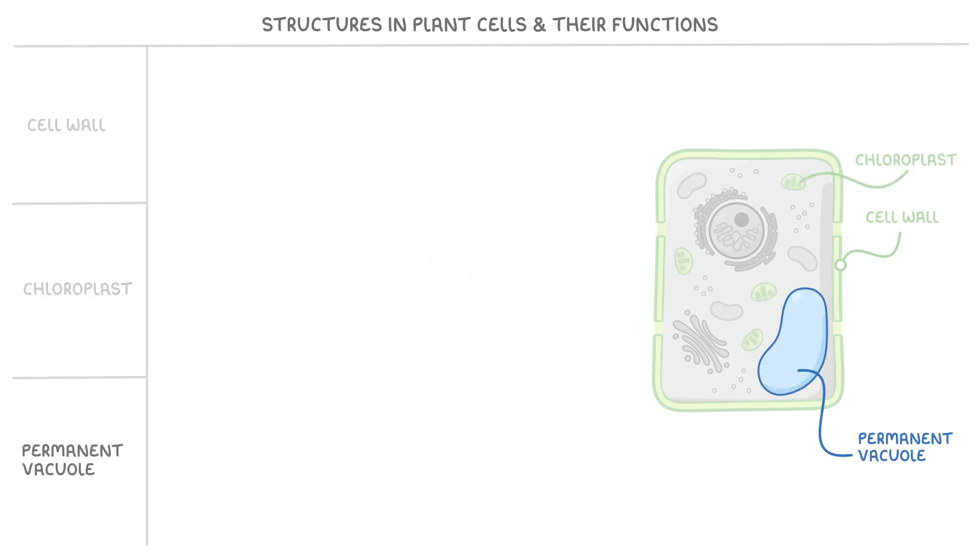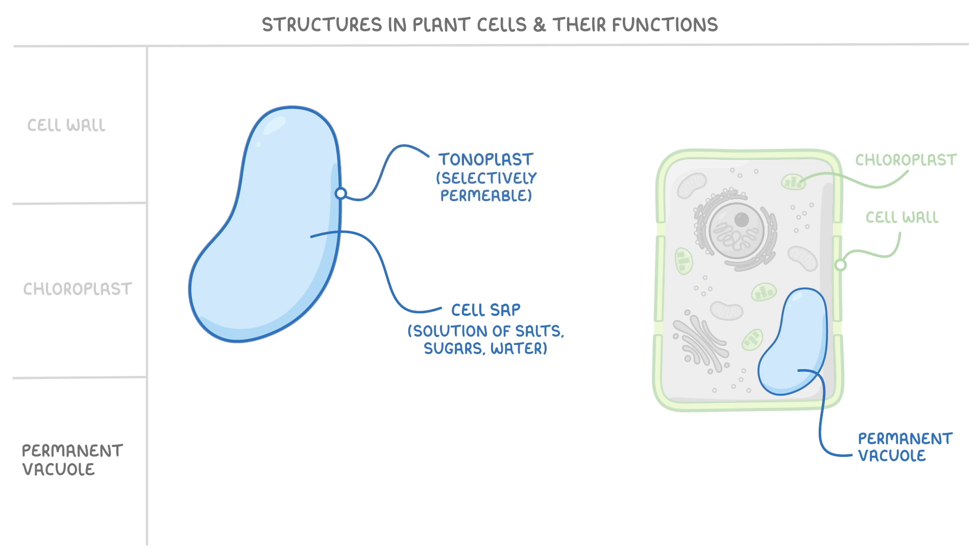The final structure we need to look at is the permanent vacuole, which we can see more clearly here. This is filled with cell sap, a fluid solution of salts, sugars, water, and other substances too. The vacuole is enclosed by a membrane called the tonoplast, which is selectively permeable, meaning it controls what enters and exits the vacuole. This hints at one of the vacuole's useful functions, which is to store nutrients.